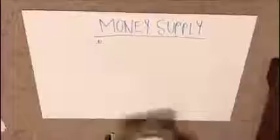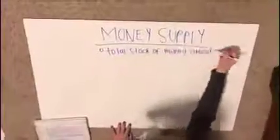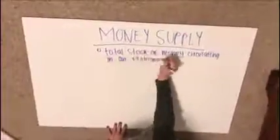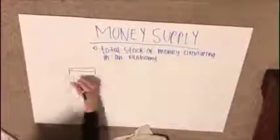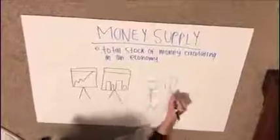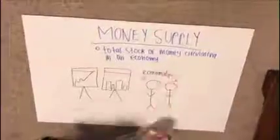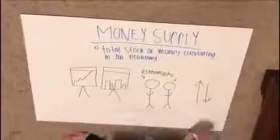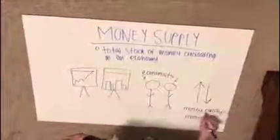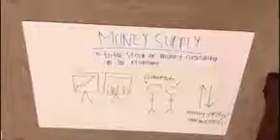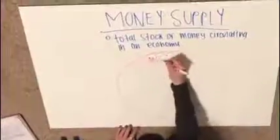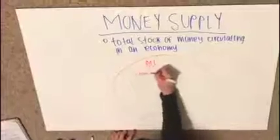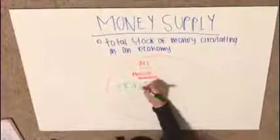The money supply is the total stock of money circulating in an economy. Economists analyze the money supply by controlling interest rates and increasing or decreasing the amount of money flow in the economy. The money supply is important because it virtually controls our money and how the economy runs, which in effect affects us. The various types of money are usually classified as M's — like M0, M1, M2, and M3.